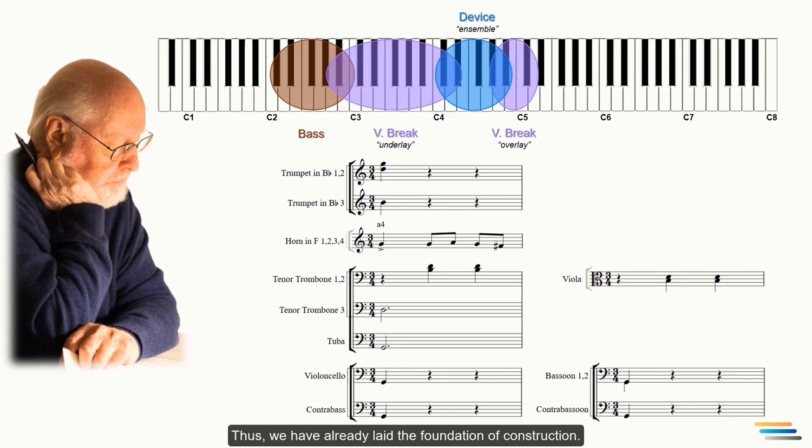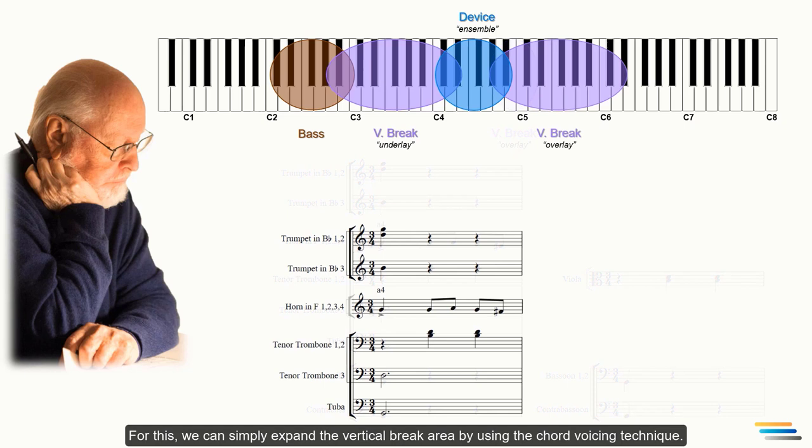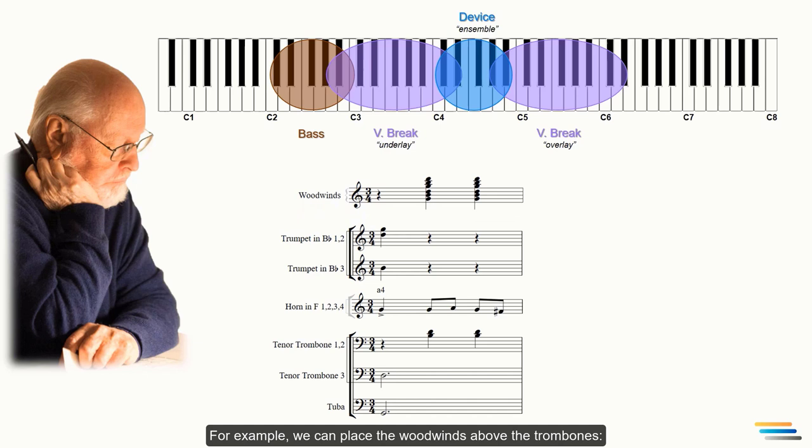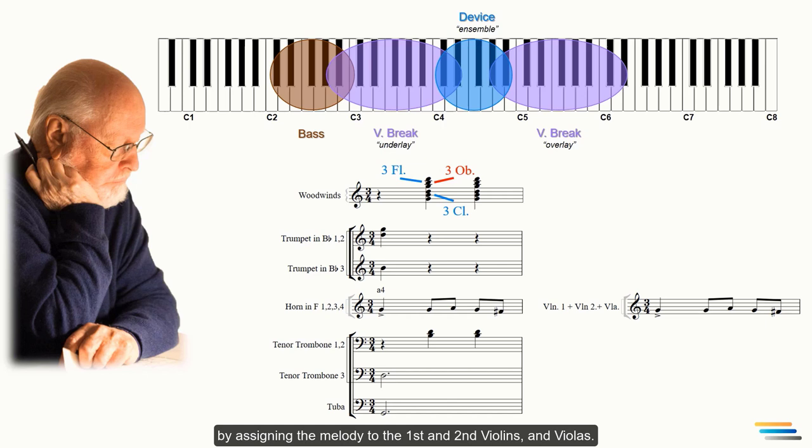Thus, we have already laid the foundation of construction. Now let's build the top part of the melody. For this, we can simply expand the vertical break area by using the chord voicing technique. For example, we can place the woodwinds above the trombones. Three clarinets, three oboes and three flutes. Finally, we can quickly complete the orchestration process by assigning the melody to the first and second violins and violas. Of course, this kind of texture is also beautiful, but it is quite simple. You can see such examples in classical scores. Let's make the texture not like this, but more colorful and a bit more complex. Instead of expanding the vertical break method, it would be better to apply the stretch method.